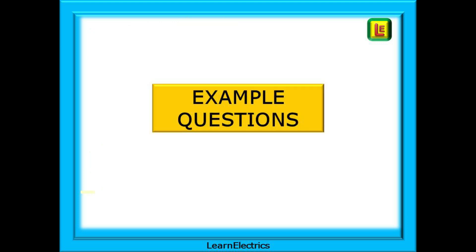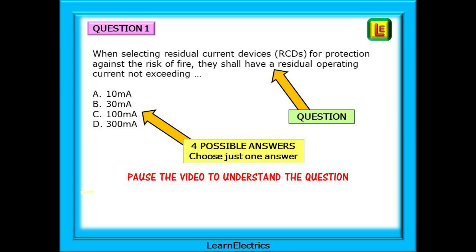Let's show you this with some example questions. We will work through the method step by step to find the answer. The question asks: when selecting residual current devices (RCDs) for protection against the risk of fire, they shall have a residual operating current not exceeding what? Following the question are four possible answers, and only one answer is correct.